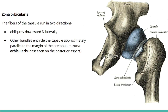The zona orbicularis is a circular area within the capsule that is very clearly seen posteriorly. The capsule fibers run in two directions: one obliquely downward and laterally, and the other as a bundle that encircles the capsule parallel to the acetabular margin — this is the zona orbicularis.